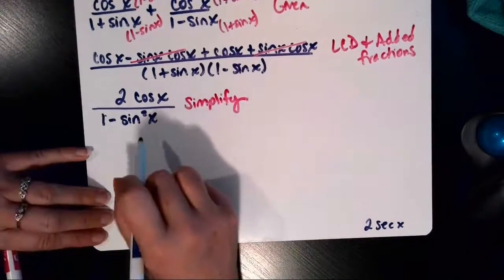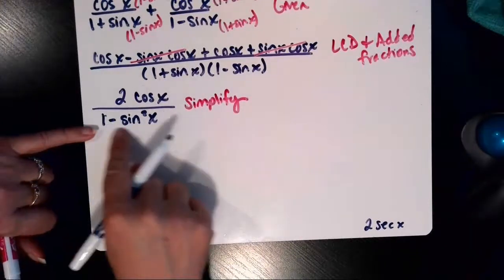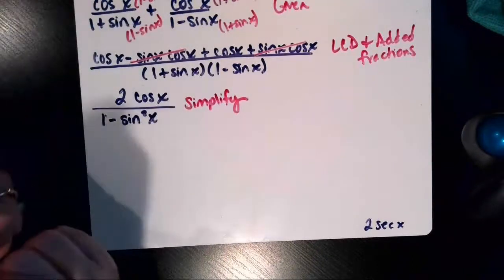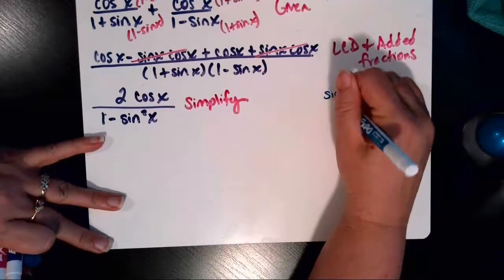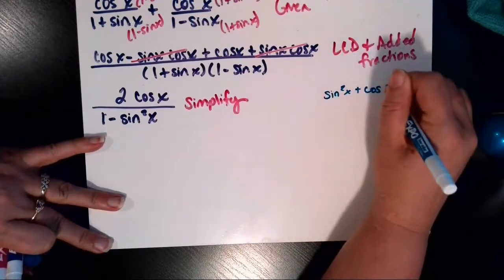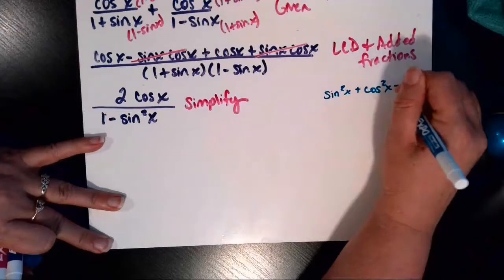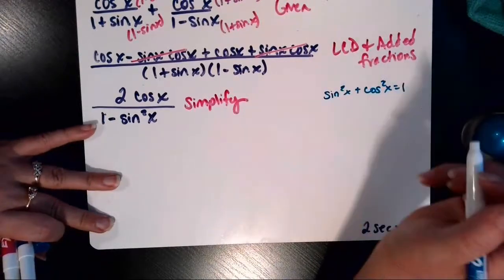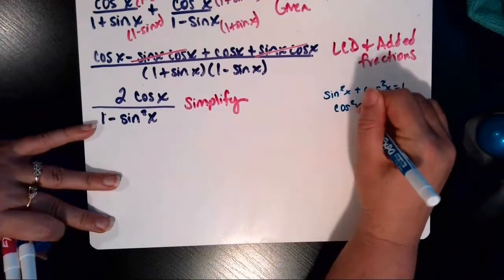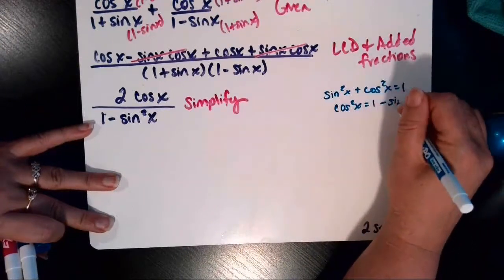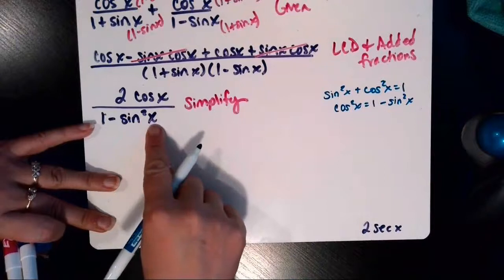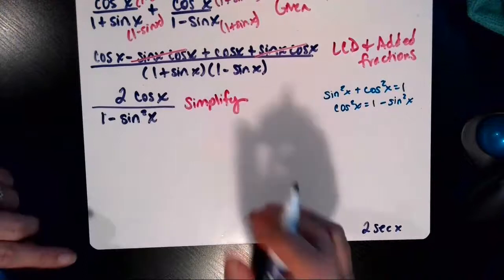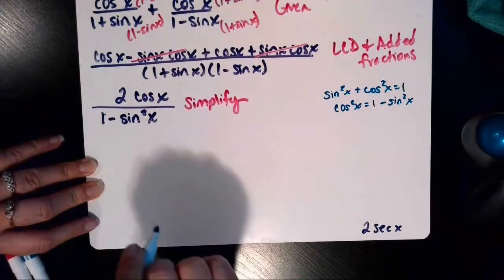Now in our step number four, this 1 minus sine squared x, that's a Pythagorean identity. So if you recall the Pythagorean identity, sine squared x plus cosine squared x equals 1. If I solve that for cosine squared x, I would subtract sine squared x from both sides. And cosine squared x then by itself would be equal to 1 minus sine squared x, which is what we've got in our denominator. So I'm going to use that Pythagorean identity then in order to substitute out this 1 minus sine squared x.